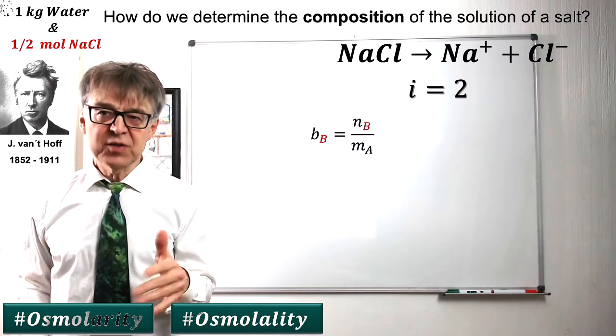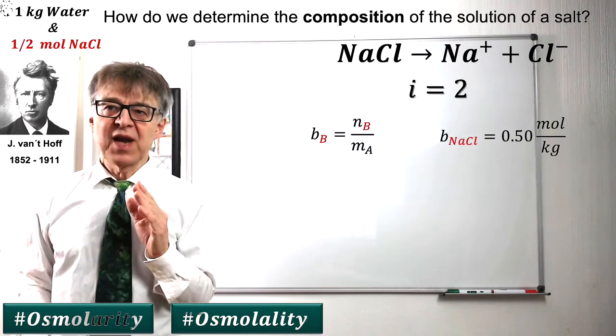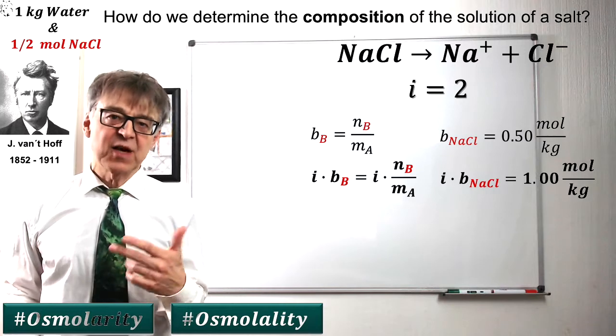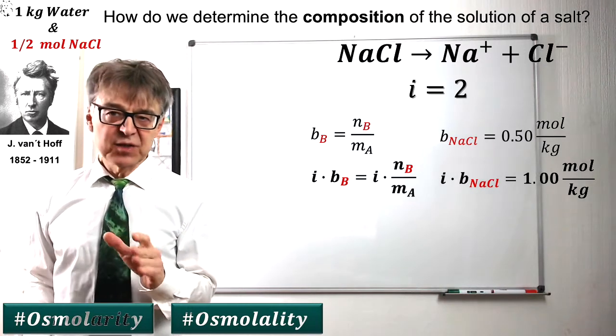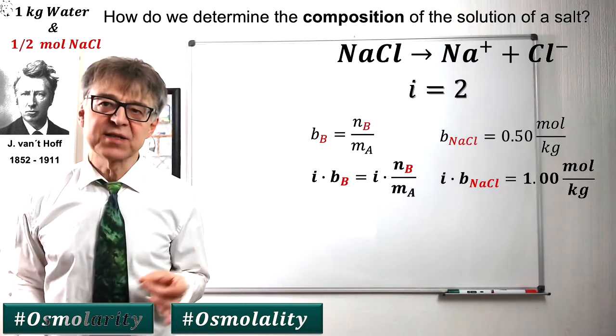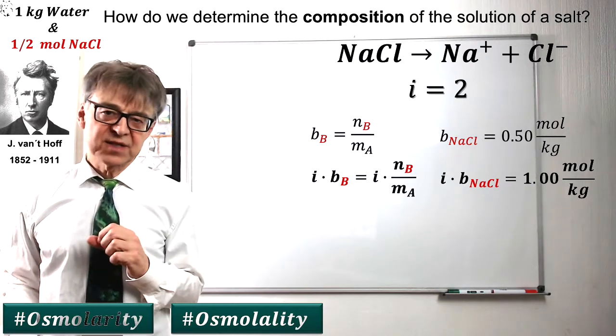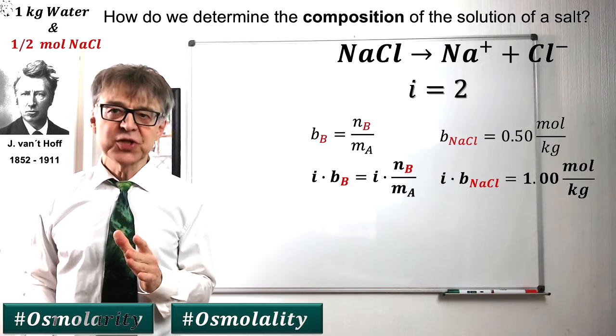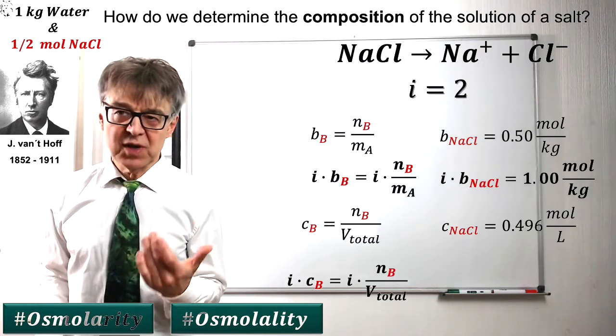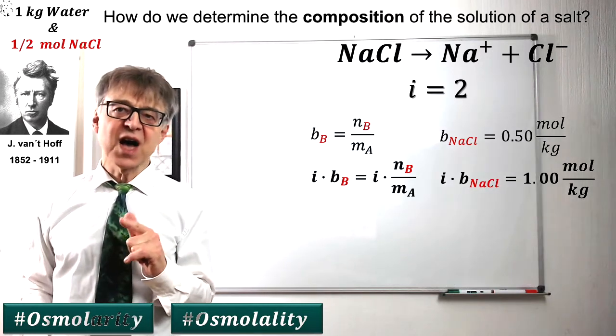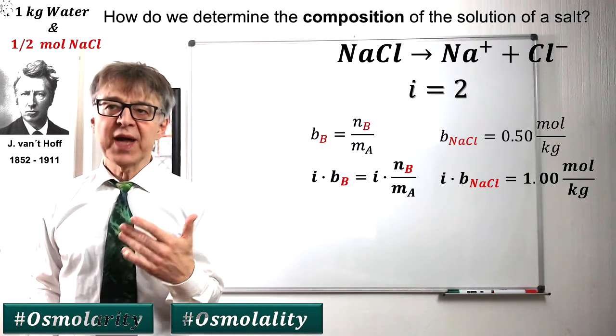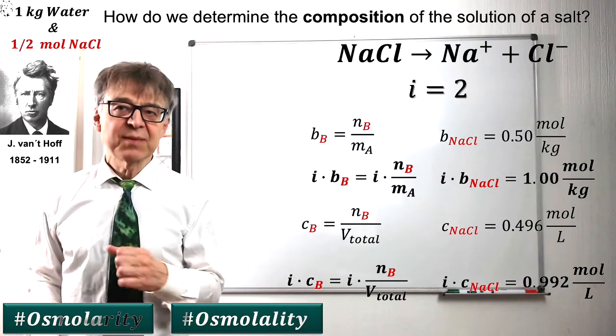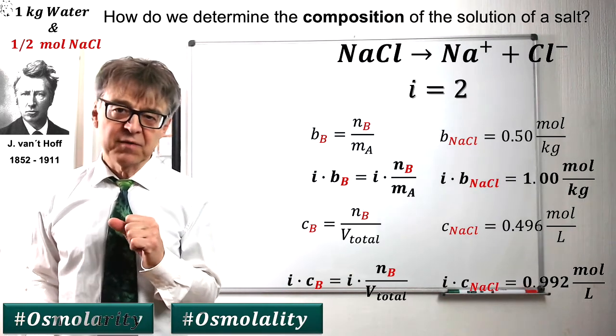The table salt solution, the saline, has a molality of 0.5 but an osmolality of 1. The solution therefore contains as many dissolved particles as the sugar solution discussed above. The two solutions are equal in osmolality, the two solutions are isotonic. Accordingly, we get the osmolarity from the molarity by multiplying by the van't Hoff factor.